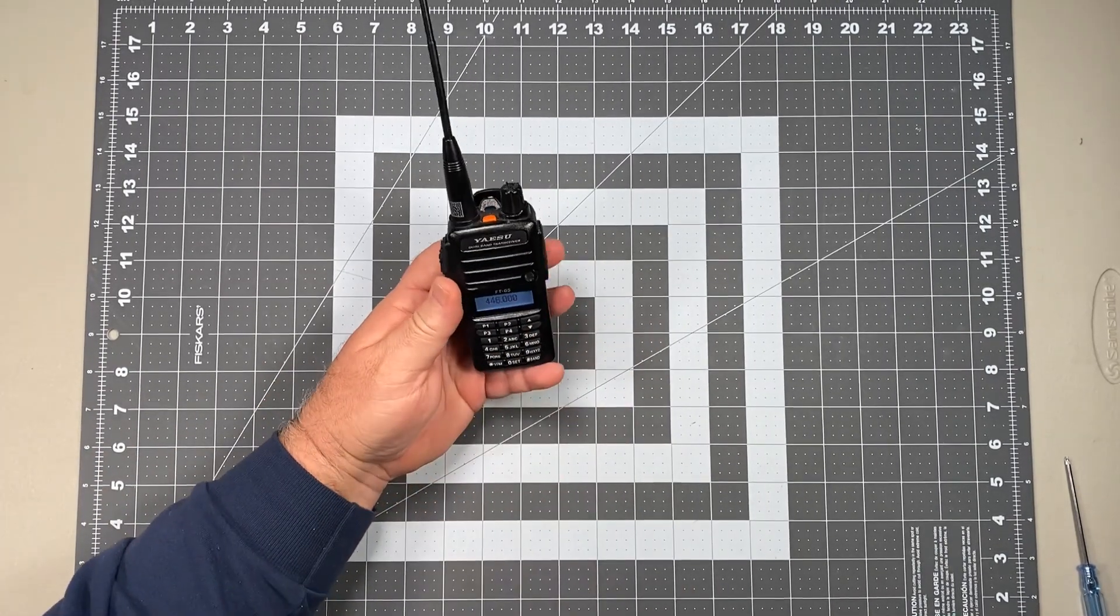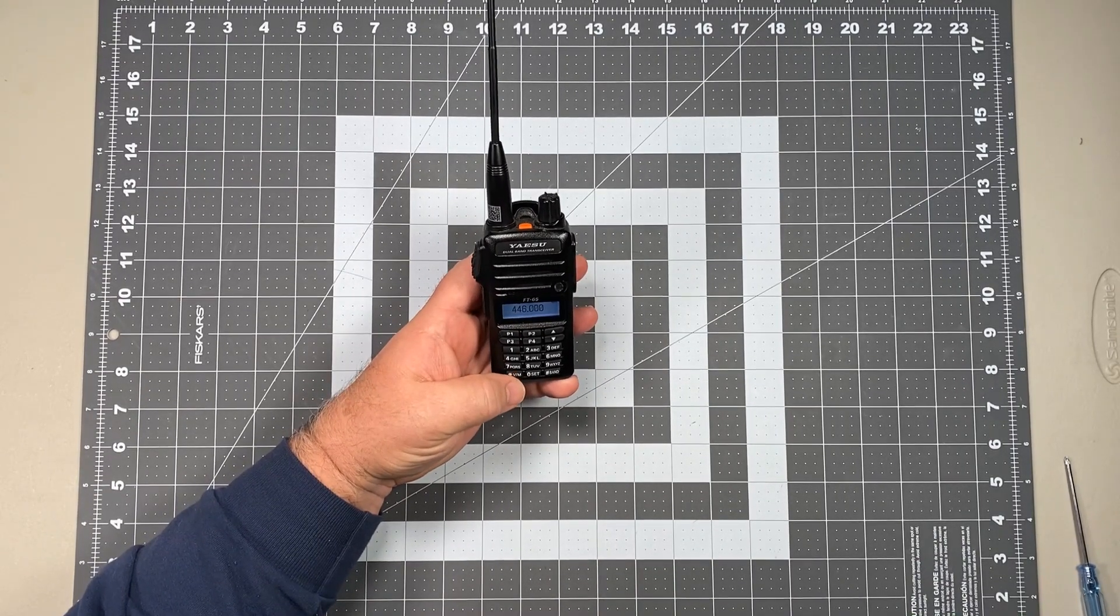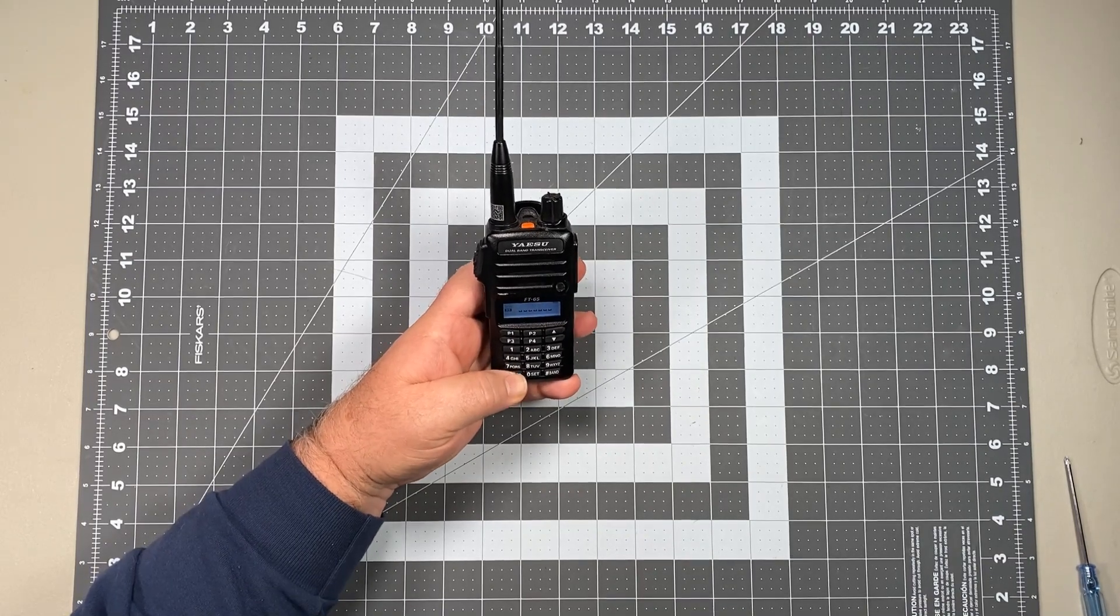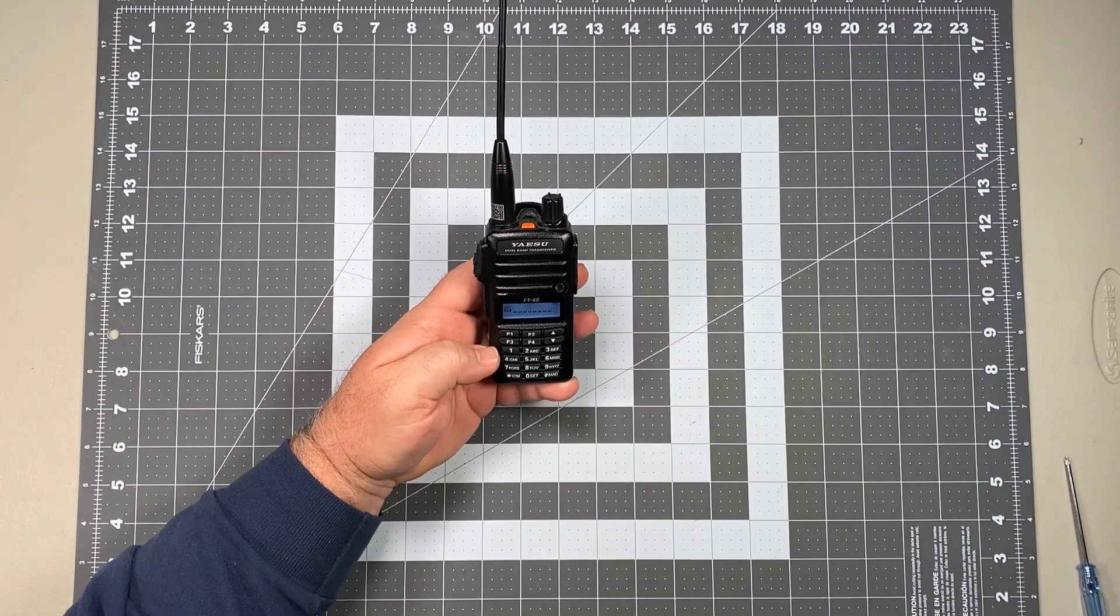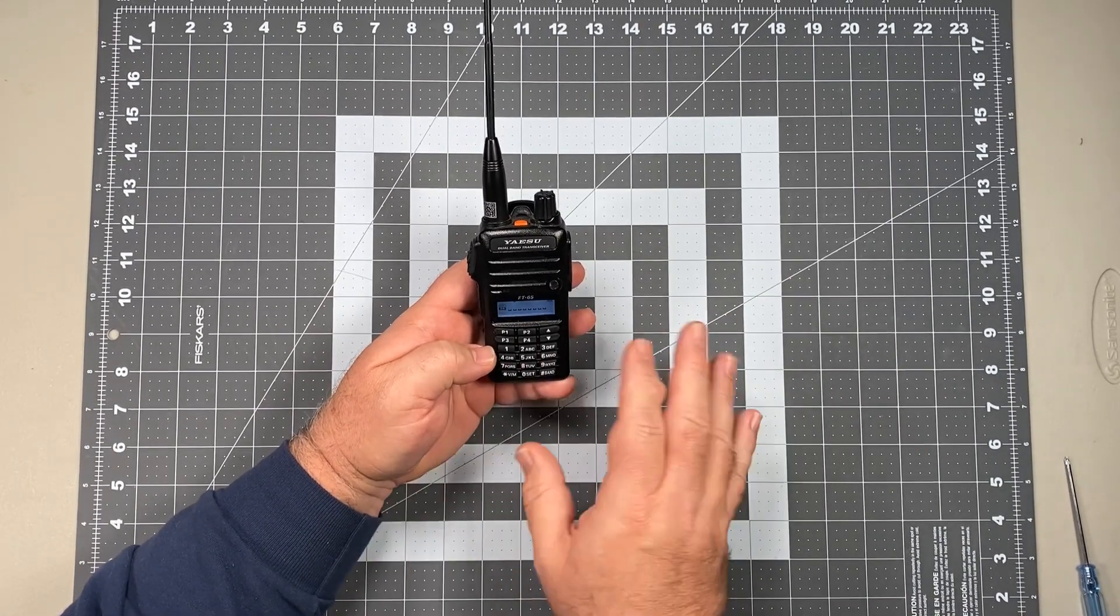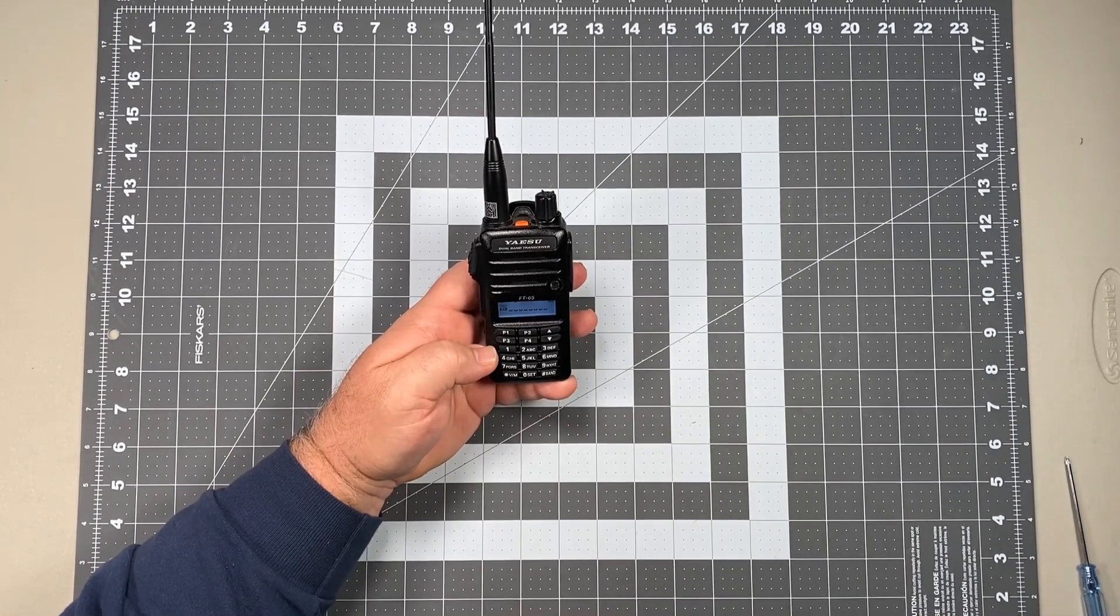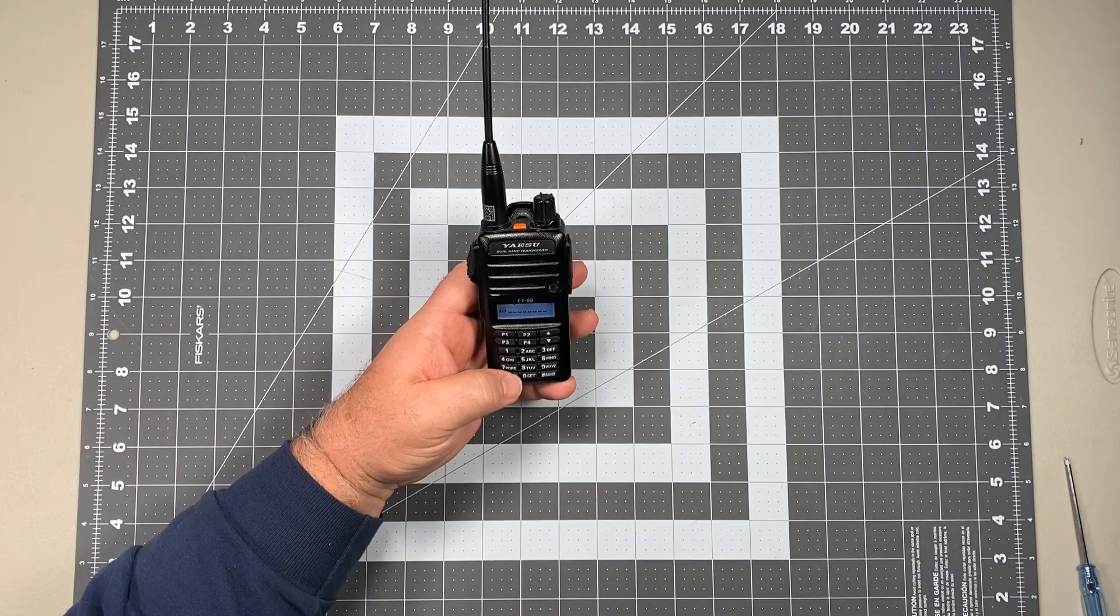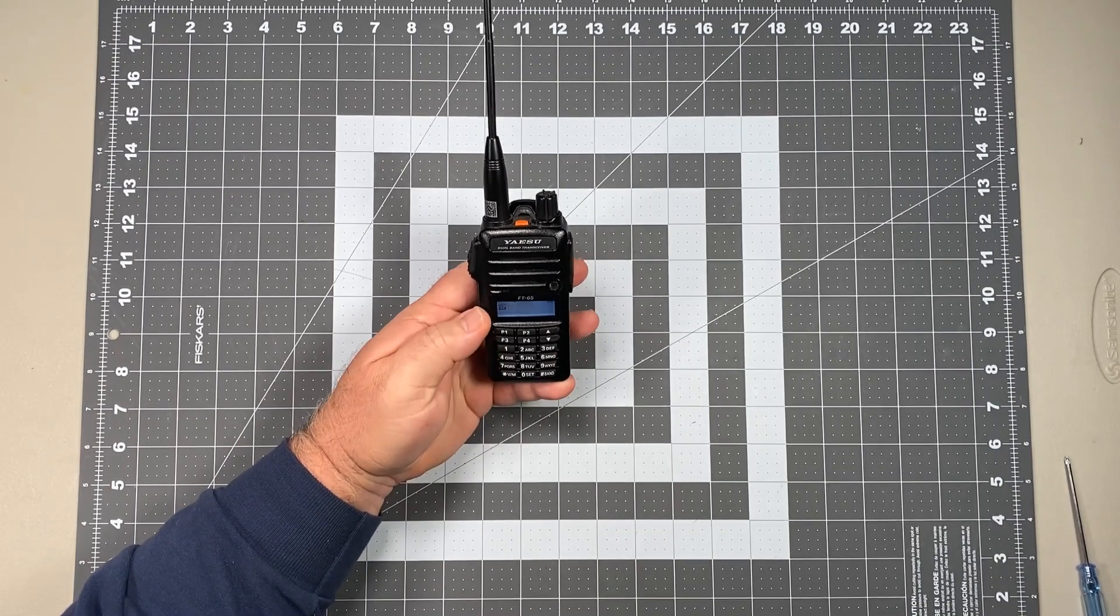So we've got that in there. And again, now that we've put that in, we're going to long press the VM. And it takes us to that next memory slot, which is going to be channel three. But this time we just want to store that, we're not going to name it. We just want to store it as a frequency that's displayed. So we're going to save this as memory channel three and we're going to just long press VM again.